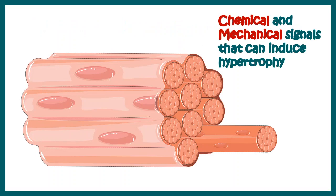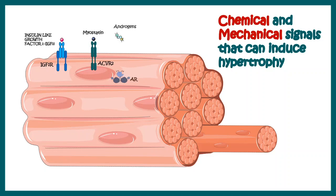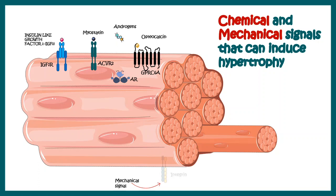There are many chemical and mechanical signals that can induce hypertrophy. Chemical signals involve insulin-like growth factor — many growth factors lead to this kind of hypertrophy response, and insulin-like growth factor is one of the key players. Myostatin, androgens, and osteocalcin all fall under chemical signals which can induce hypertrophy. Apart from chemical signals, there are mechanical signals such as mechanical stretch and strain in the muscles, which can be sensed by several integrin receptors.